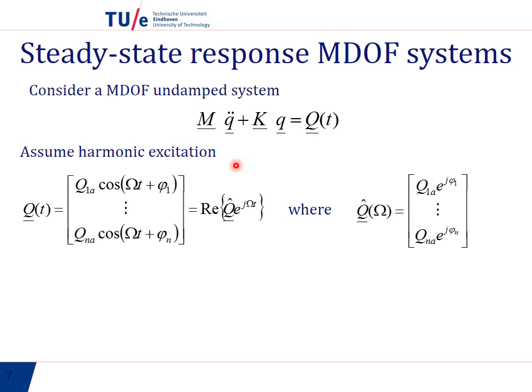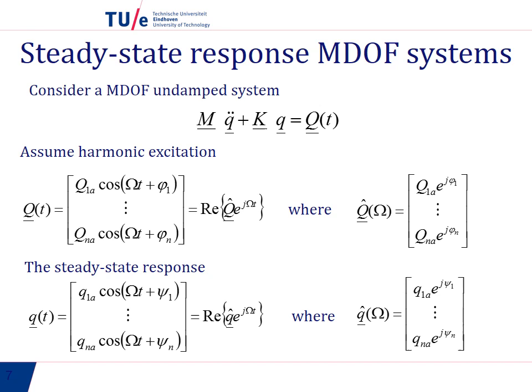So if we assume harmonic excitation, then for the generalized forces we can do the same as we just did for the force. It's a cosinus type of function and it is the real part of this q hat e to the power of j omega t, etc. And if we have this excitation, then the response will have exactly the same form with another phase shift. And this can also be written as the real part of q hat e to the power of j omega t, with q hat given here.